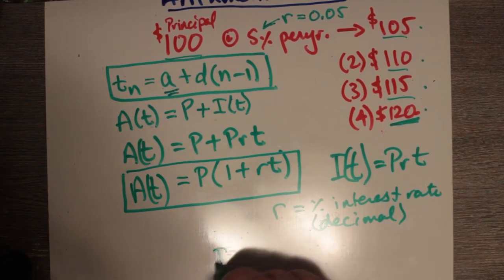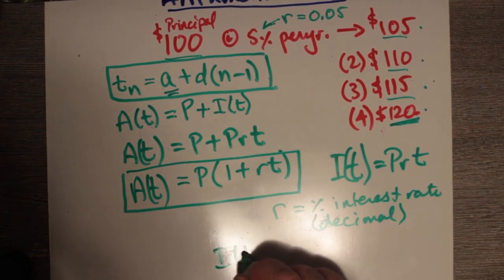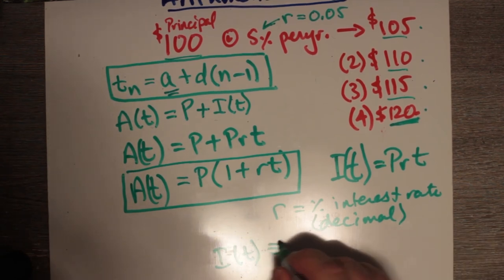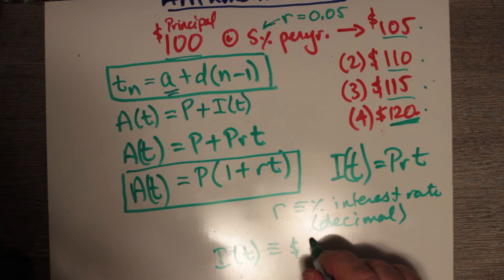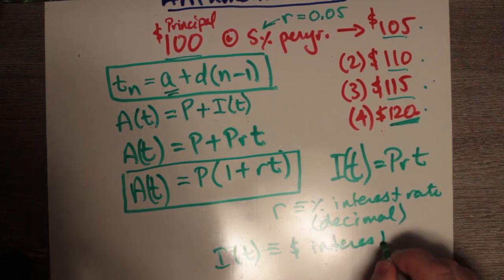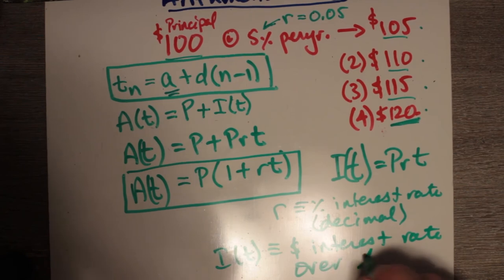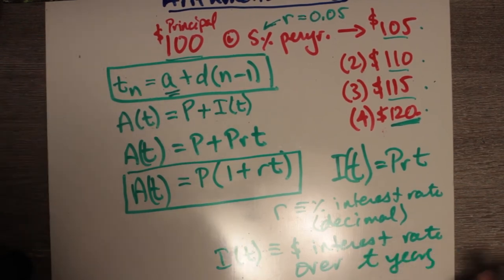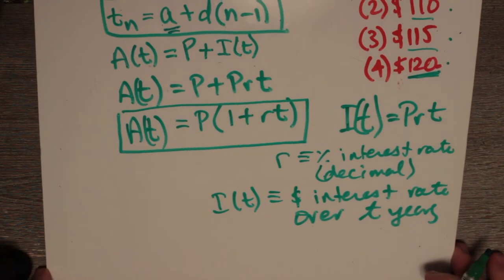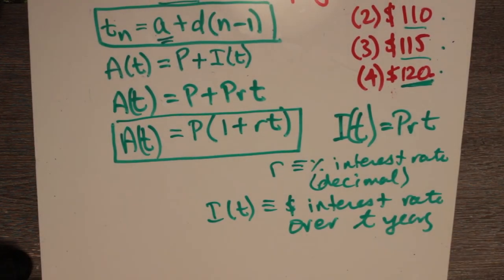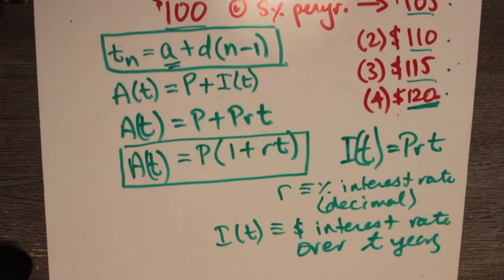And then I of T is defined as the dollar interest rate over T years. It's the dollar interest rate over T years.